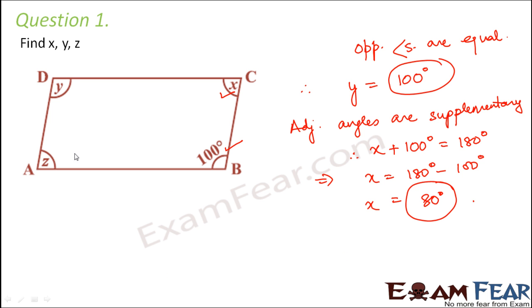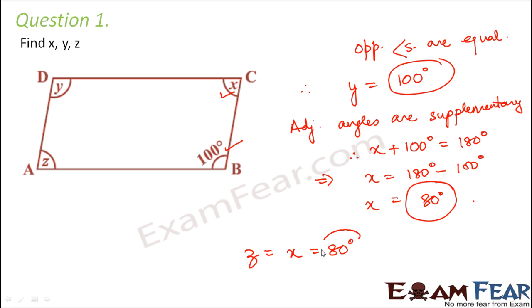Now for z: z and x are opposite angles, therefore z is also equal to x, which is 80 degrees. Therefore the values of x, y, and z are 80, 100, and 80 degrees respectively.